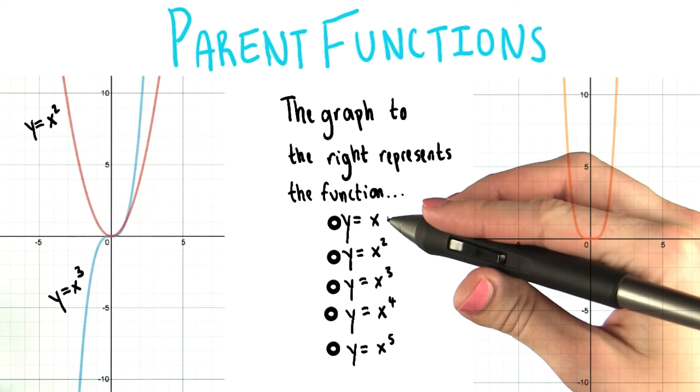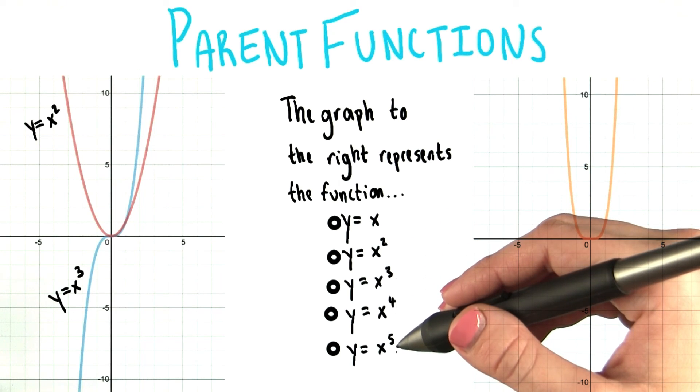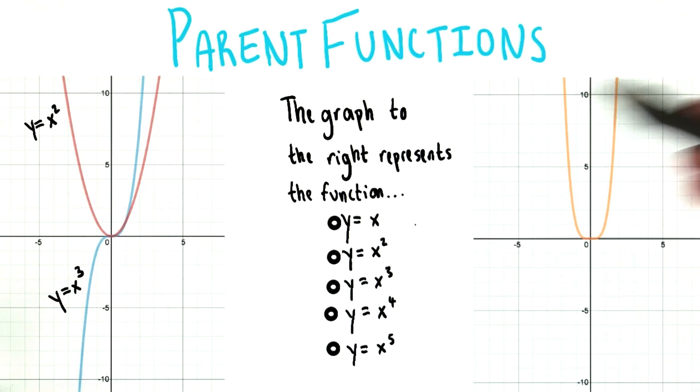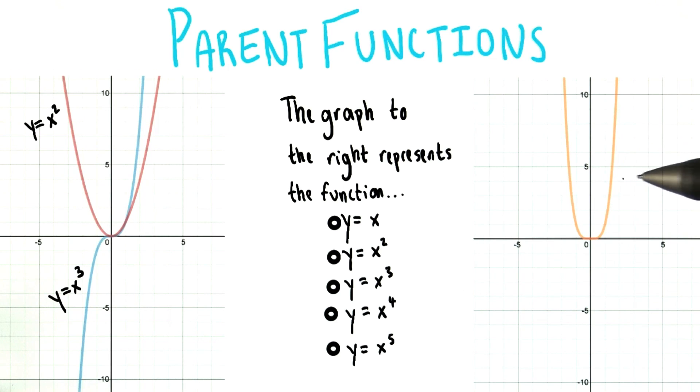Your choices are y equals x, y equals x squared, y equals x cubed, y equals x to the fourth, and y equals x to the fifth. So you can always make a t chart and plug in some points and see which of those t charts best matches this graph.